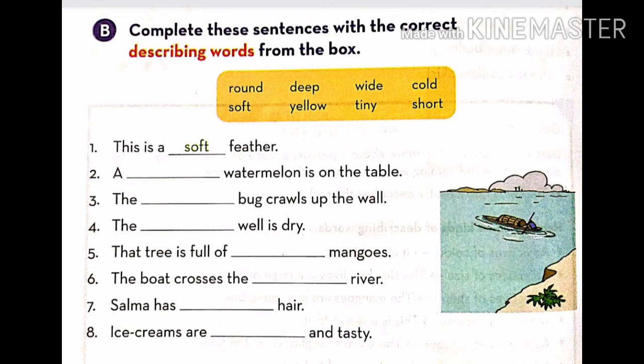See the second one. A dash watermelon is on the table. What will be here? We cannot say here deep, tiny, yellow, short. We can write here round. Why? Because watermelons are round in shape.